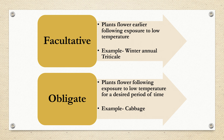Now we will come to the various types of vernalization. Vernalization is broadly divided into two types: facultative and obligate. In facultative vernalization, plants flower earlier following exposure to low temperature — the plant will flower pretty earlier. This is seen in winter annual triticale.